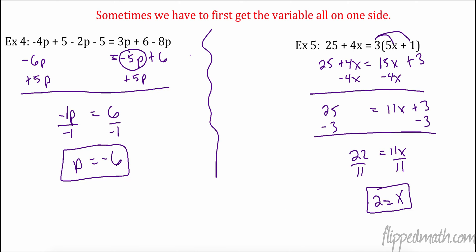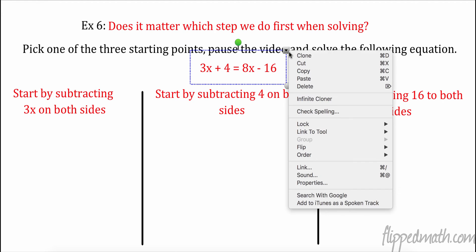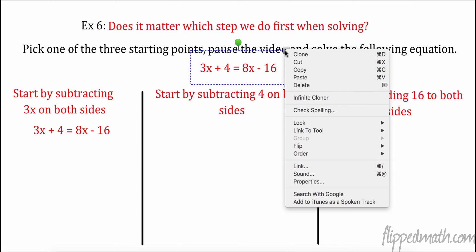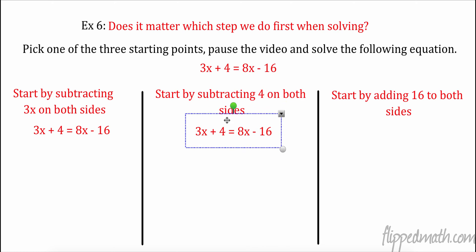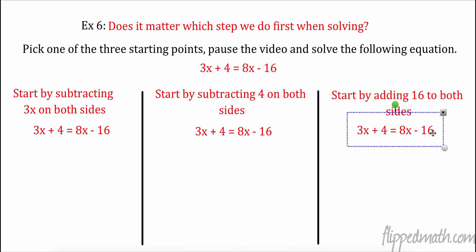Does it matter which step we do first? Here's your equation: 3x plus 4 equals 8x minus 16. Just pick one of these starting approaches: subtract 3x from both sides, subtract 4 from both sides, or add 16 to both sides. Pick one and solve it. Then we're going to solve all of them and see if it matters what you do first.